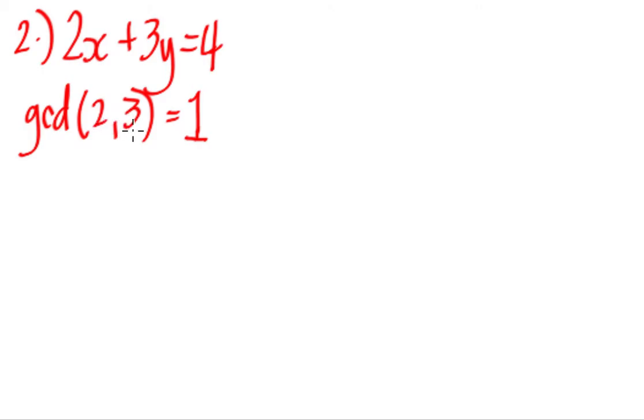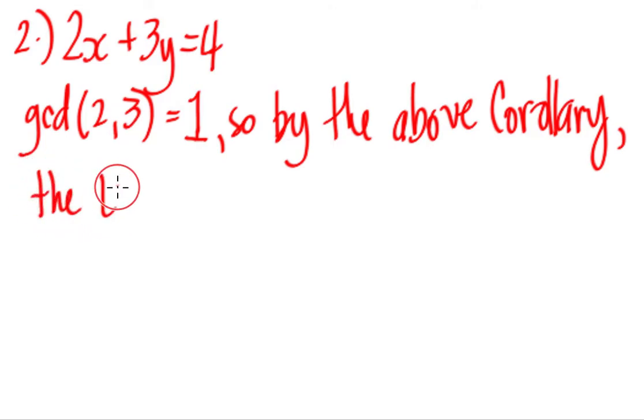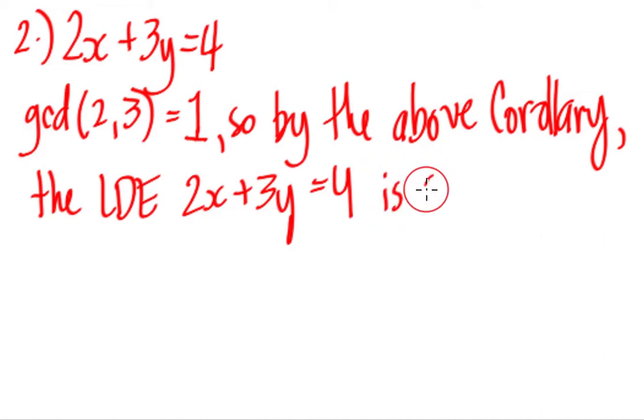So we can say, by the above corollary, we can conclude. The LDE 2x plus 3y equals 4 has a solution or shall we say is solvable. Again, the word for is solvable is has a solution. You can change this into has a solution.